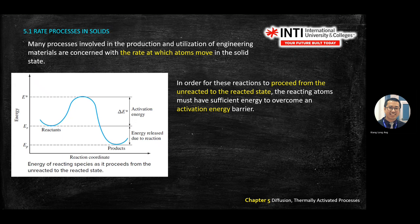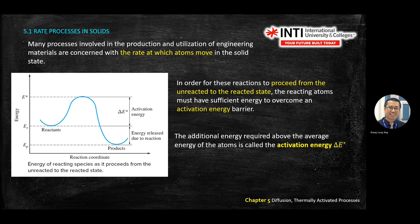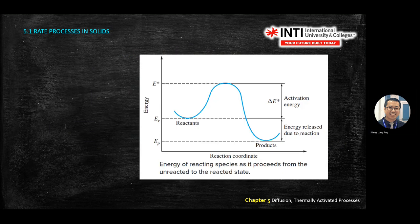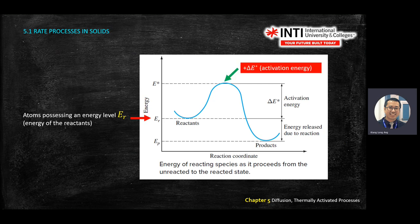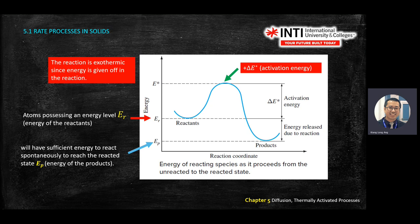There is a stage called unreacted, then you give energy and it reacts, then the energy drops. The reaction is exothermic — it gives energy when it becomes stable after reaching a certain stage. So it depends on how much energy is given.